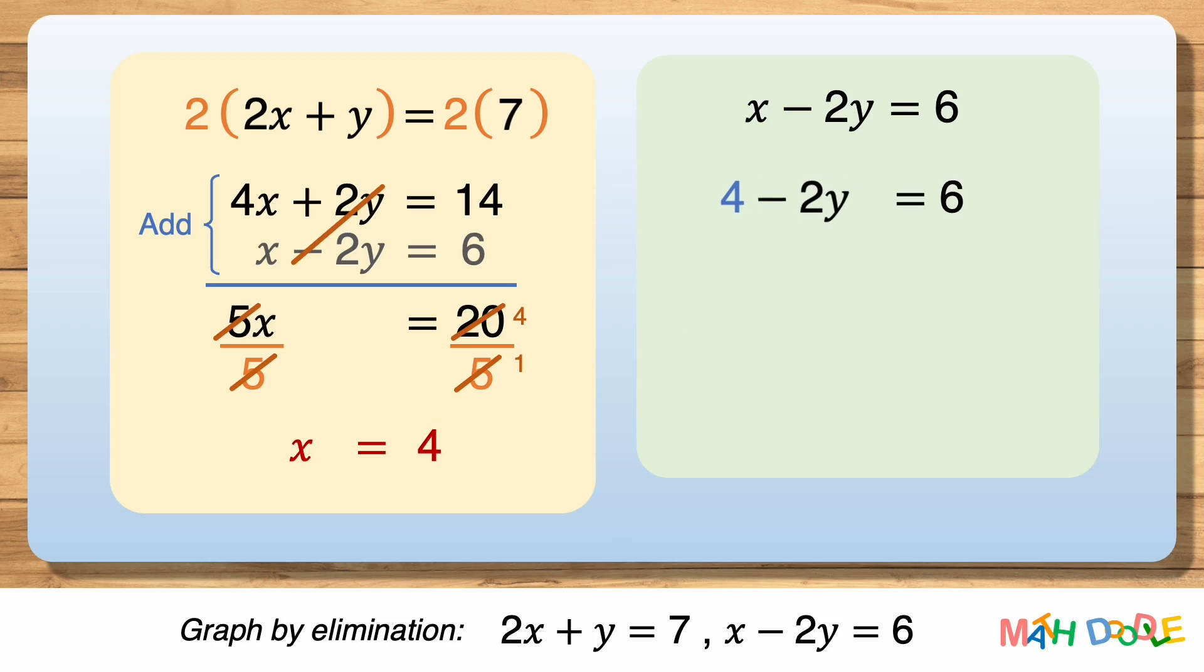After subtracting 4 from both sides of the equation, we have minus 2y equals 2. Then, by dividing both sides by minus 2, the equation becomes y equals minus 1. And this tells us that y is minus 1.